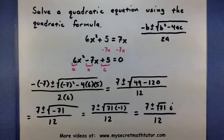So I can't simplify my square root anymore. So I'm basically done. This represents both of my solutions for x. I say 2 because one is where we take care of the plus: 7 plus the square root of 71i all over 12. And the other solution is 7 minus the square root of 71i all over 12.